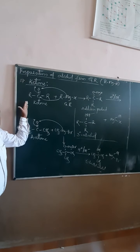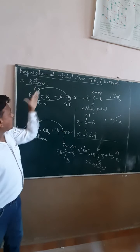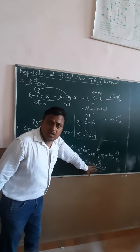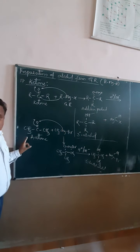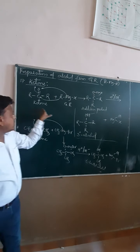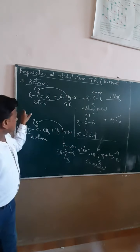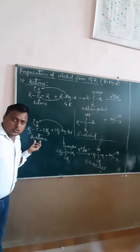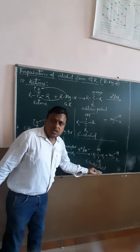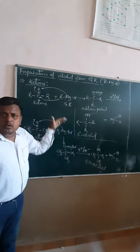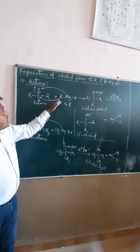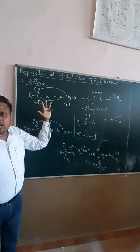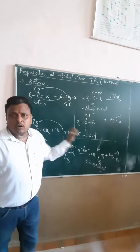This is the preparation of alcohol from ketone. You can use any ketone — symmetric or asymmetric — and the answer must be a tertiary alcohol only. This is a very important reaction for your competitive exam: conversion using Grignard reagent to form alcohol using either aldehyde or ketone. This is a very simple part of preparation.